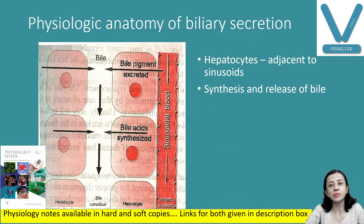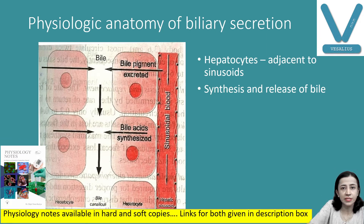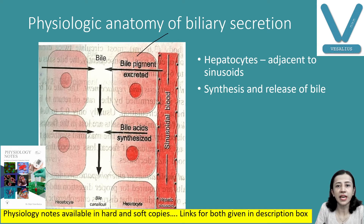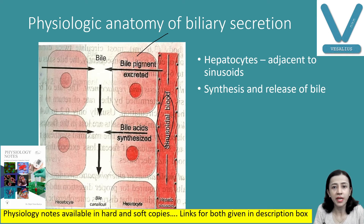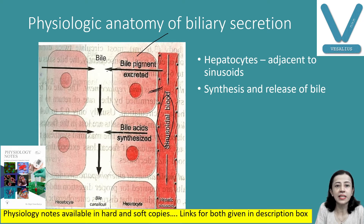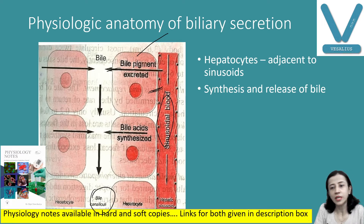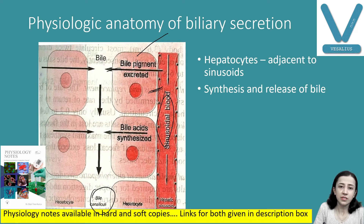Now, the physiological anatomy of bile secretion. You can see here we have hepatocytes, and adjacent to that we have sinusoids. From the blood in the sinusoids, the hepatocytes get the products which are required. They synthesize the bile and this bile enters into the bile canaliculi, which is also present adjacent to the hepatocytes. So hepatocytes have on one side sinusoidal blood and on the other side bile canaliculi.